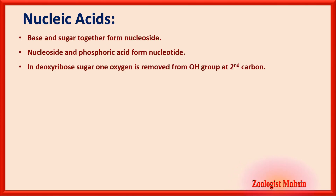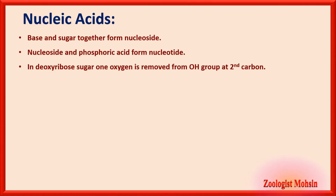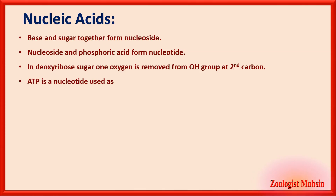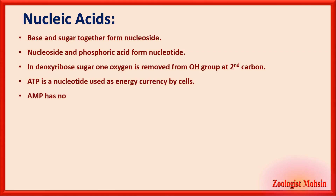Base and sugar together form a nucleoside — not a nucleotide. Nucleoside plus phosphoric acid forms a nucleotide — these are important MCQs. In deoxyribose sugar, one oxygen is removed from the OH group at the second carbon of ribose, so the second carbon has only H instead of OH.